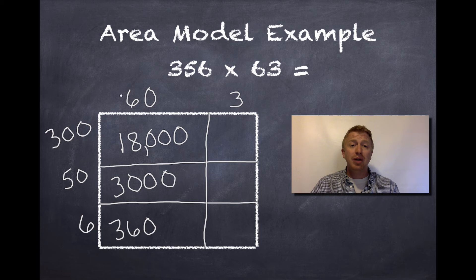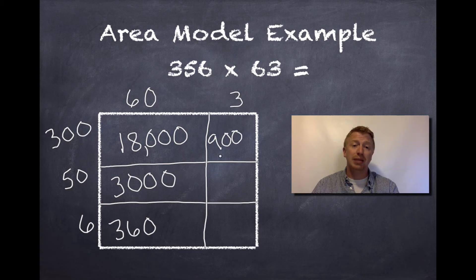Now that I'm done with 60, I can move over to 3. 3 times 300, so 3 times 3 is 9, and I'm going to represent my two zeros that were in my factors. 3 times 5, or I'm sorry, 3 times 50 is 150, and 3 times 6 is 18.